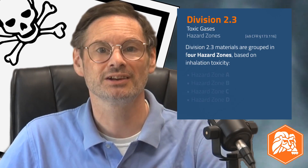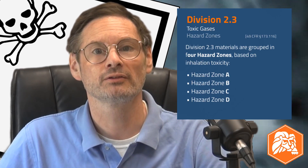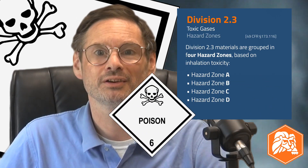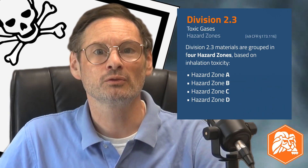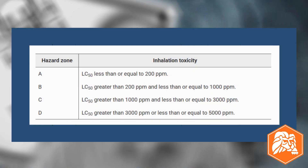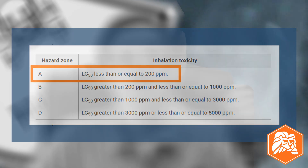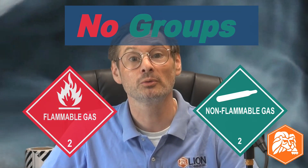Division 2.3 Toxic by Inhalation Gases are assigned to Hazard Zones A, B, C, or D, based on inhalation toxicity measured by lethal concentration, or LC50. As we saw with Division 6.1 Poison Liquids in our last video, the zones for Division 2.3s provide a very clear upper range to distinguish the most acutely toxic gases. As for other Class 2s — Division 2.1s and Division 2.2s — these are not broken into hazard zones or packing groups.